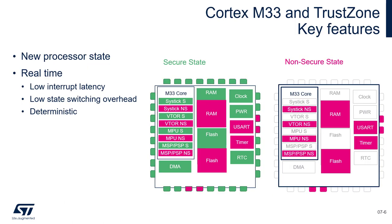Cortex-M33 and TrustZone: the Cortex-M33 is part of the ARMv8 architecture, which adds an extra security state of execution. When the core runs in secure state it has access to all resources in the microcontroller. When running in non-secure state it has limited visibility of resources, with great granularity in how those resources can be restricted. It is the job of the secure application to define the split between the secure and non-secure world. It is possible to restrict access to multiple flash and RAM regions, individual peripherals, and even individual GPIO pins.